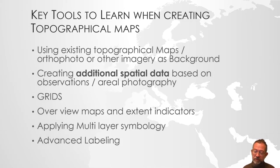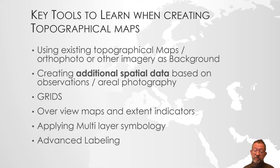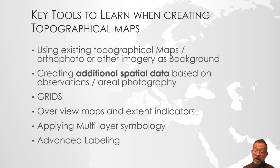First of all, what are we going to learn about? Which tools are we going to learn? We are going to learn about using existing topographical maps or ortho photos, or other images in the background, so adding things on top of it. We will be talking about how to create additional spatial data, so digitizing information. We will be talking about how to use grids or graticules on maps. We will be talking about creating overview maps and indications of where one map frame is inside another map frame. We will be talking about using multi-layer symbology, so how we can build symbols of different elements. And finally, we will talk about creating advanced labeling in QGIS. So those are the main topics that we will be covering.